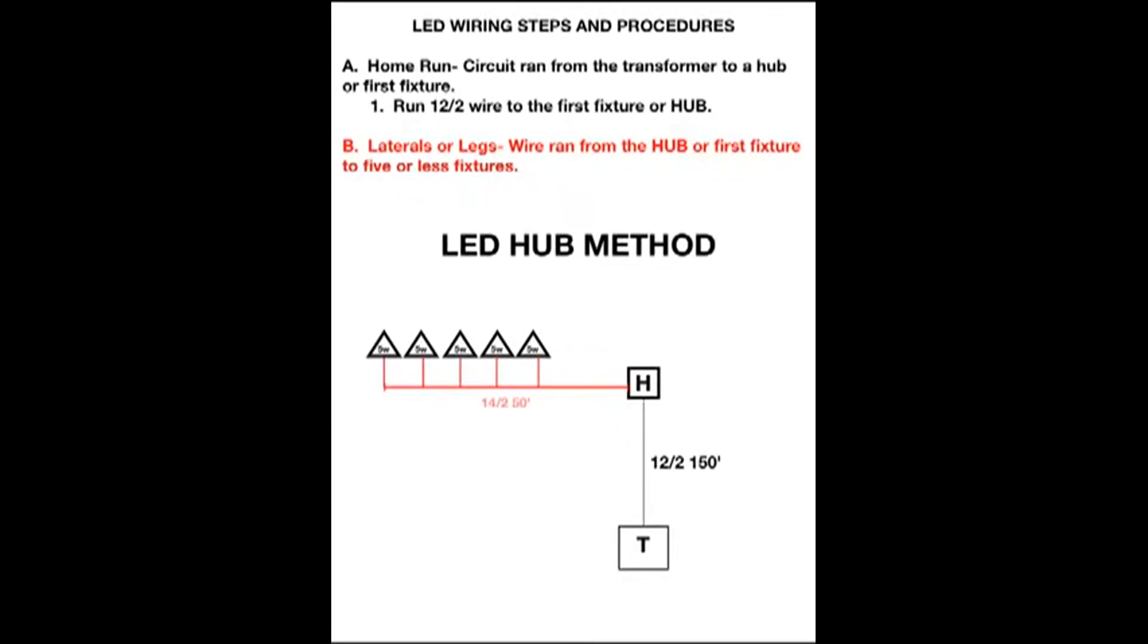Laterals or legs, that's a wire ran from your hub or the first fixture to five or less fixtures. Don't exceed five fixtures on each leg.